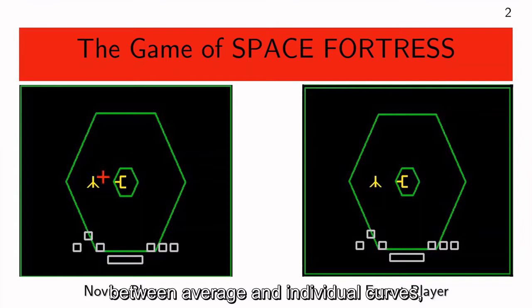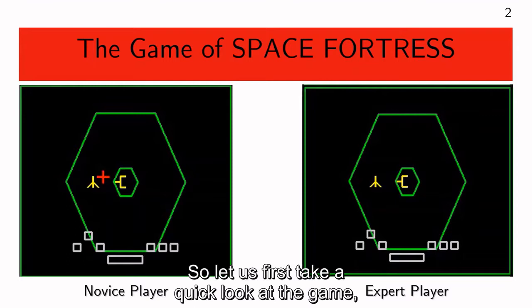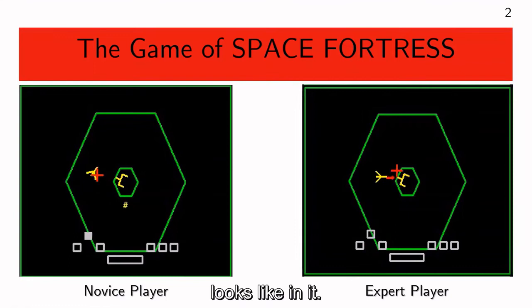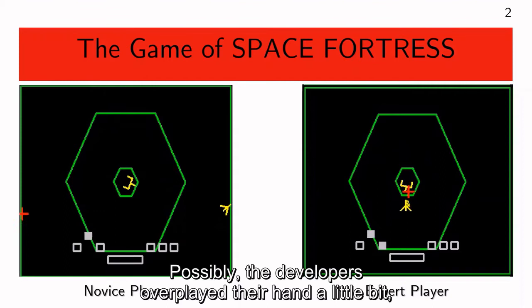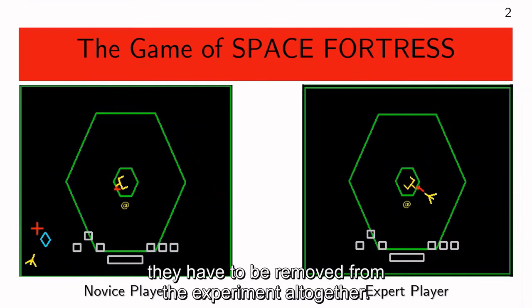To illustrate the mismatch between average and individual curves, we are going to use data from the game of Space Fortress. Space Fortress was developed in 1989 to create a task sufficiently complex to test human limits. Possibly the developers overplayed their hand a little bit, as some participants found the task so difficult they had to be removed from the experiment altogether.